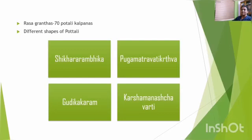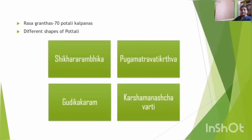The first shape is Shikharamvika — the Pottali is prepared in the shape of a stout corn. The second is Puga Matravati Kritva — the Pottali is prepared in the shape of Arecanut. Third is Gudikakara — prepared in the shape of a round pill. The last is Kashamanasha Varthi — 12 grams of drug made into a Varti form. No matter what the shape, the amount of heat applied and received by each particle during the procedure is the matter of significance.